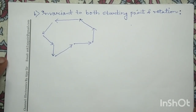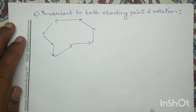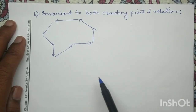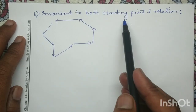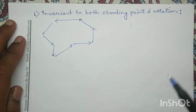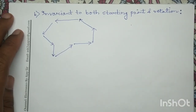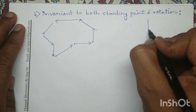Next, we will solve the second part. We have to determine the eight-directional chain code which is invariant to both the starting point and the rotation. We will proceed in a similar manner.